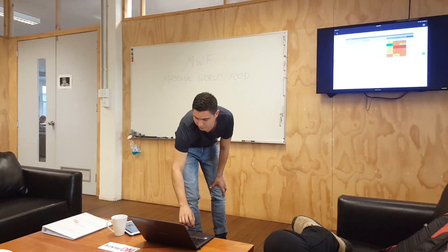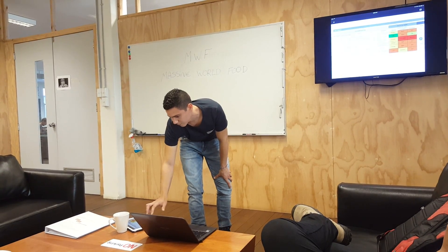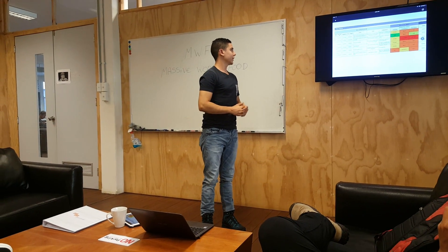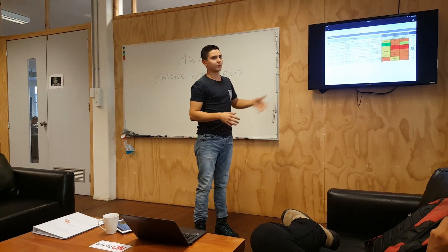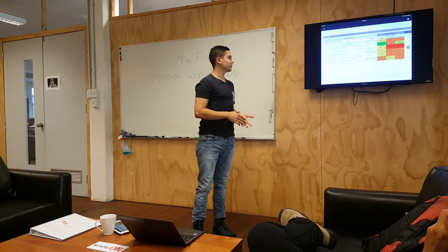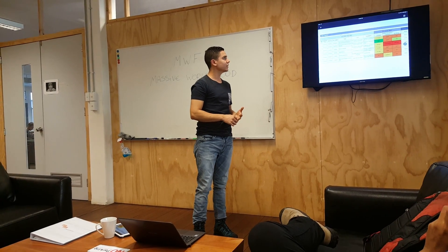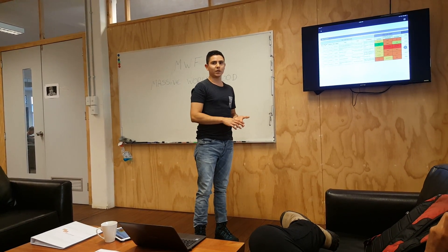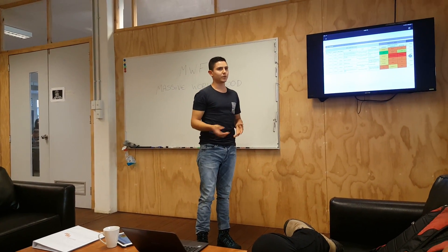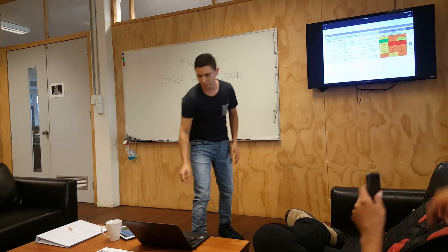These risks are the ones we're going to see in this table. In the register, I noted the category, the event — which is basically the risk — cause and consequence, and the assessment about likelihood, consequence, and the rating. Most of my risks have a high or very high rating, so it was kind of tricky to identify the possible causes and possible treatment.